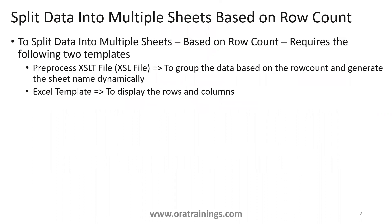To design this logic, we require two templates. One is a pre-processor accessibility template, which provides information about what the group name is and on what basis you have to group the data. The other is the Excel template, in which we mention the columns as well as records — that is, the column information and a repeating group information.